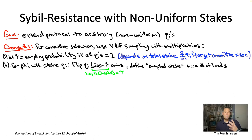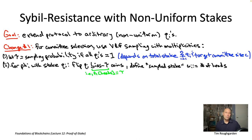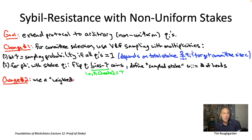That's the first change concerning how the committee gets selected, using exactly the second variant discussed in the Part 2 VRF videos. Now that we are sampling committee members with multiplicities, we need to revisit the consensus protocol—Tendermint—that they're going to be running. We need a version of Tendermint that accommodates non-uniform voting power.